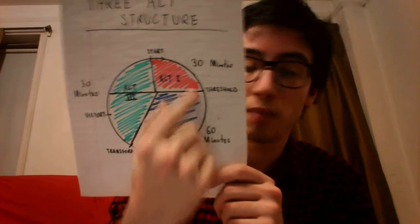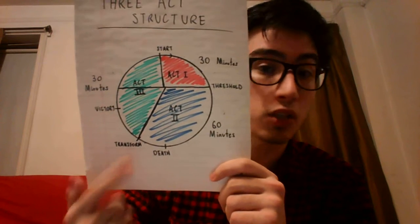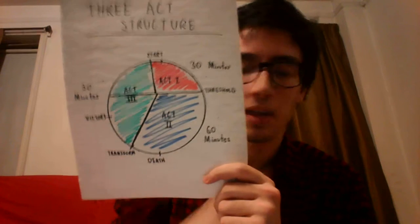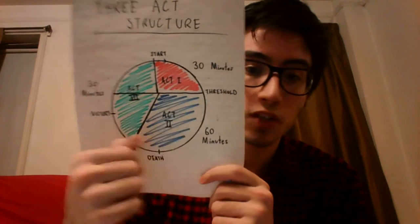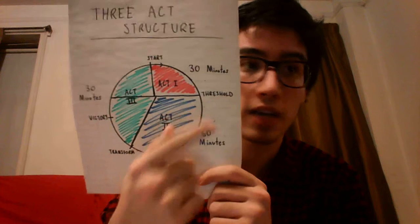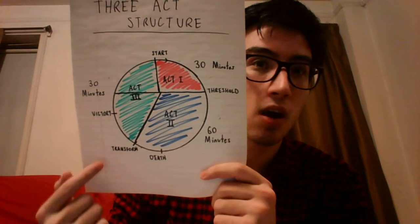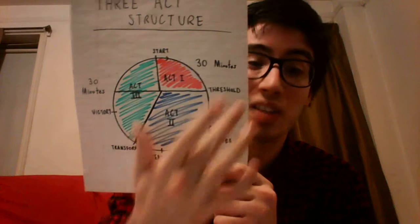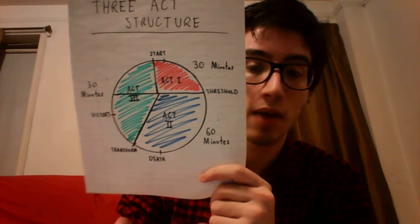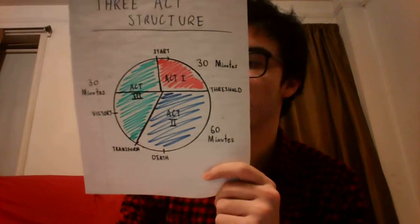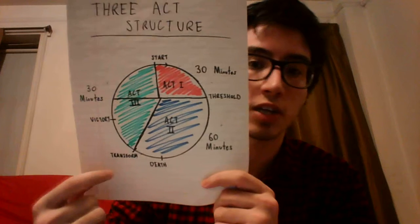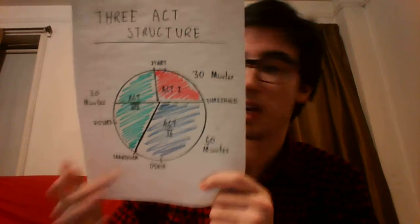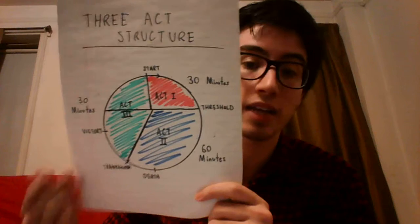The second act covers everything from crossing the threshold all the way to the hero's transformation. Using Iron Man as an example, act two covers everything from the creation of the Iron Man suit and flying back to America, up to just before the big battle with the Iron Monger. That takes around 60 minutes in a two-hour movie — about half the movie. Then act three is after that transformation, the final confrontation, the big push, all the way to the end — usually another 30 minutes.